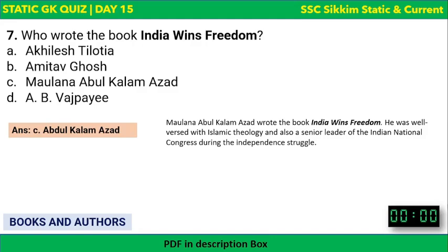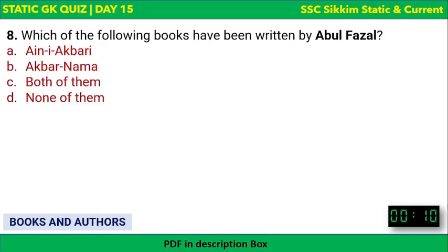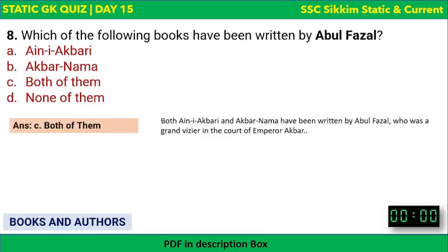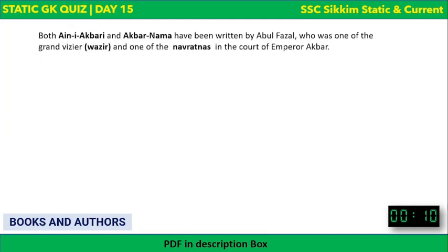Which of the following books have been written by Abul Fazl? The options are Ain-i-Akbari, Akbarnama, both, or none. Abul Fazl wrote both Ain-i-Akbari and Akbarnama. He was one of the Navratnas in Akbar's court — also known as the Grand Vizier — and served as a key intellectual figure in Emperor Akbar's Mughal court.